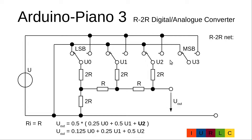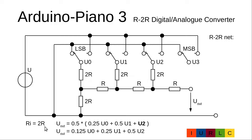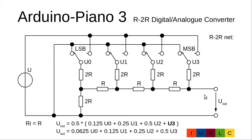We add the next stage. Again a voltage source with internal resistance 2R, and a second voltage source connected via a 2R resistor, with the middle point fed out. Applying our formula: Uout = 0.5 times the combined voltages. Multiplying out gives Uout = 0.125·U0 plus 0.25·U1 plus 0.5·U2. The internal resistance is R, and after adding the series resistance, the internal resistance becomes 2R.